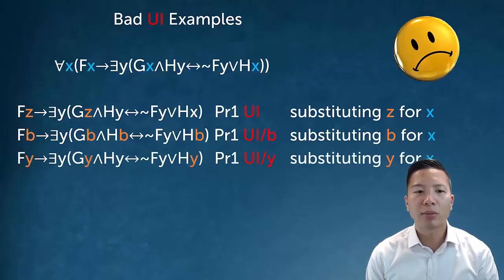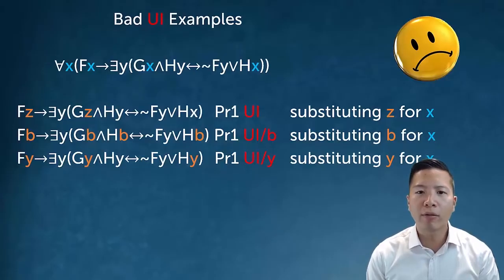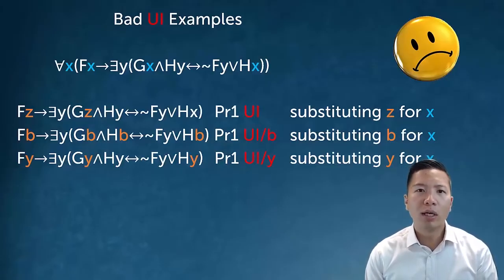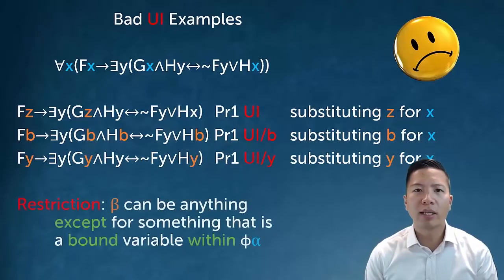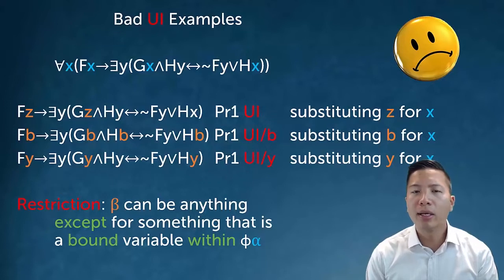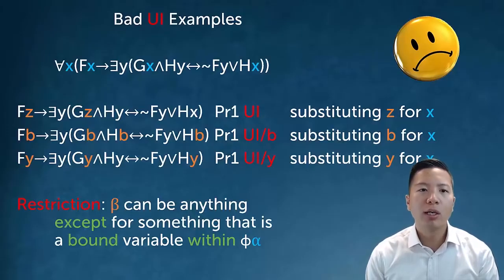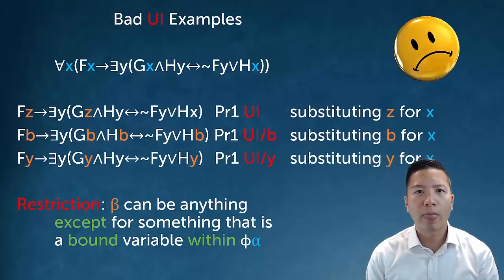In the last bad example, I tried to substitute y for x, and I did substitute every instance of x and only x. But this is a violation of the restriction: you cannot instantiate to a letter that is bound to a different quantifier within the original scope. Here, y is bound to the existential within the original scope of the universal, so I can instantiate to anything except y.